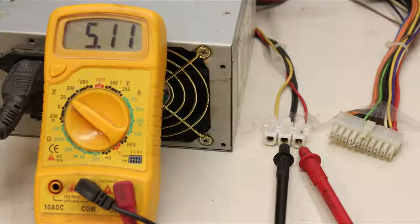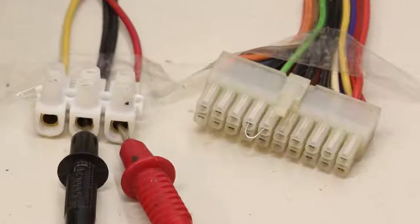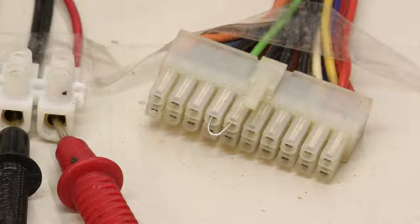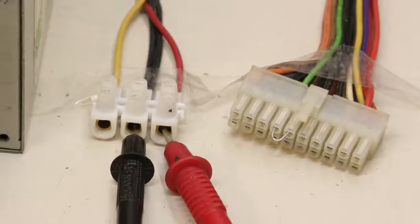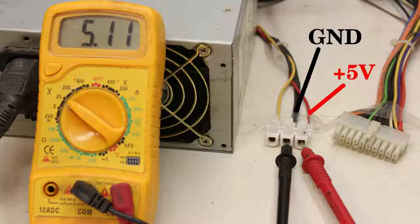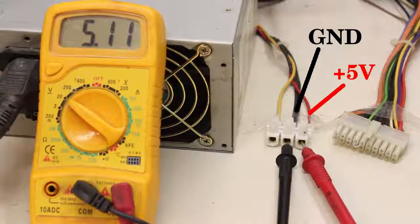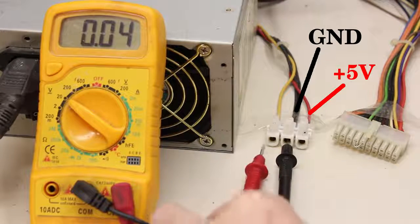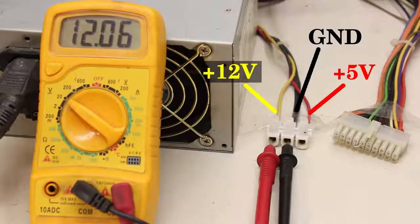The voltage source I am using is an old computer power supply. The green cable must be joined with ground to activate the device. Black cables are ground. Red cables plus 5V and yellow cables plus 12V.